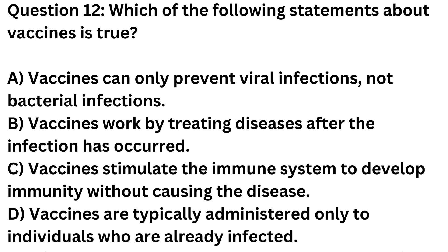Question 12. Which of the following statements about vaccines is true? A. Vaccines can only prevent viral infections, not bacterial infections. B. Vaccines work by treating diseases after infection has occurred. C. Vaccines stimulate the immune system to develop immunity without causing the disease. D. Vaccines are typically administered only to individuals who are already infected.